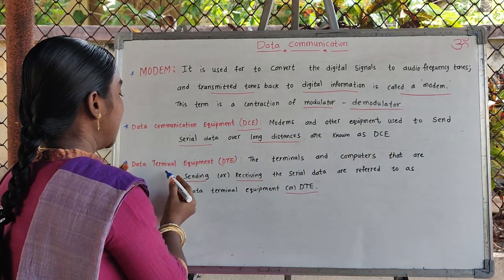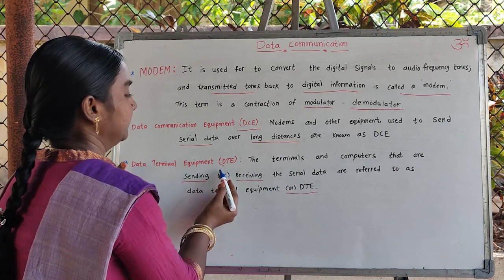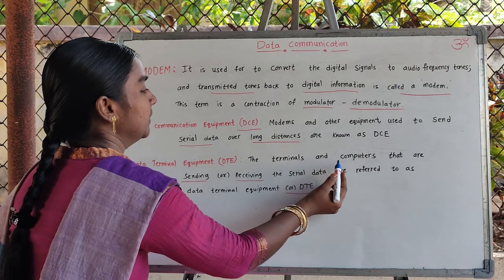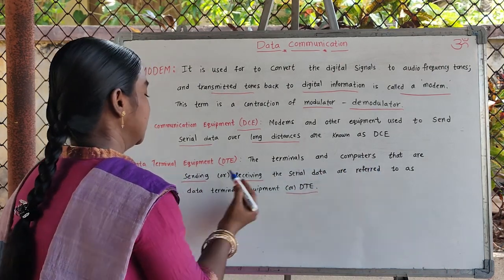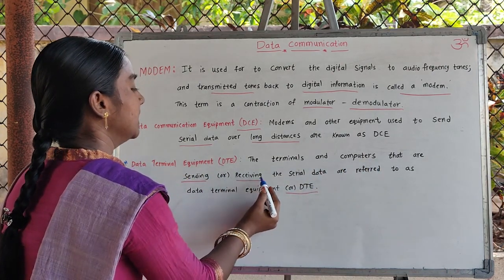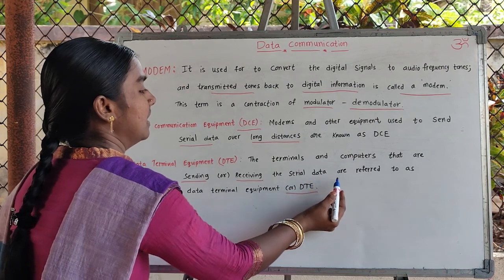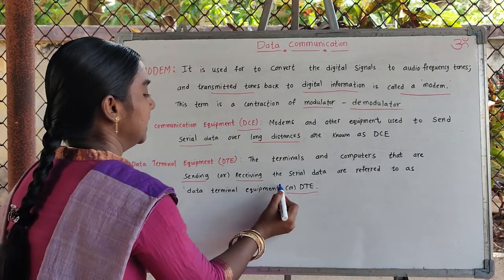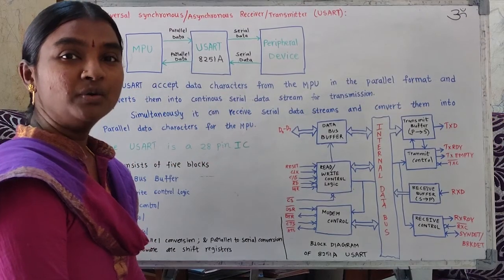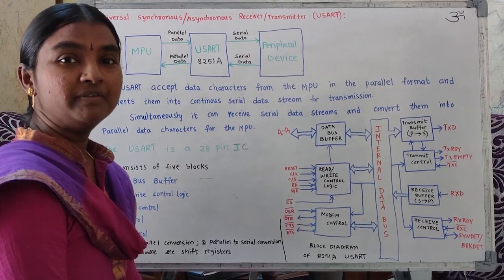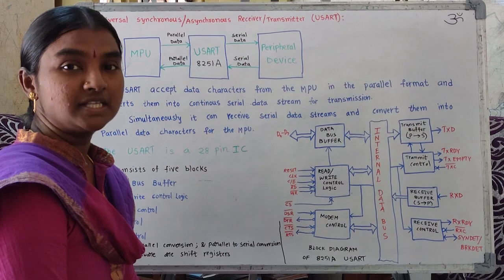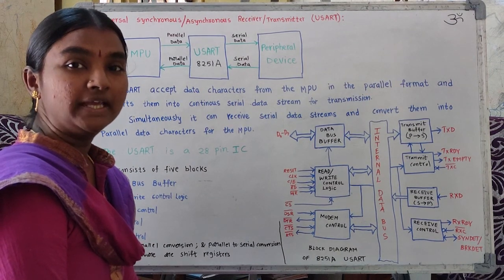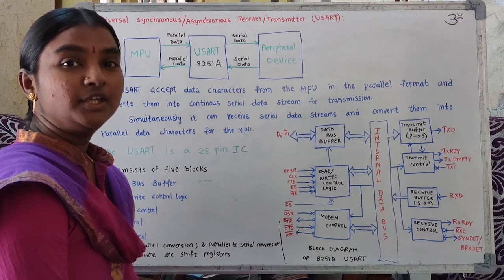Data terminal equipment refers to terminals and computers that are sending or receiving serial data. Now I will explain the universal synchronous or asynchronous receiver or transmitter, which in short can be denoted as USART.